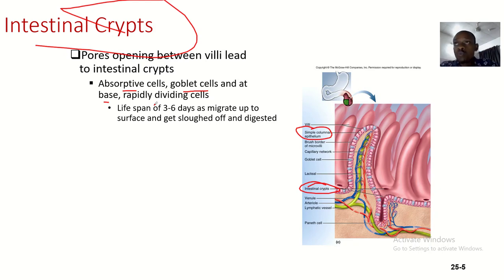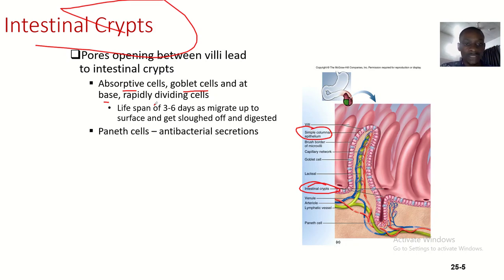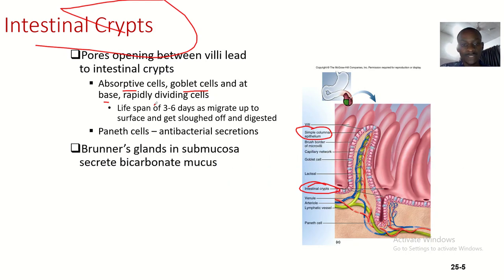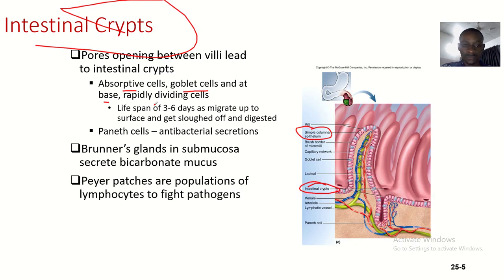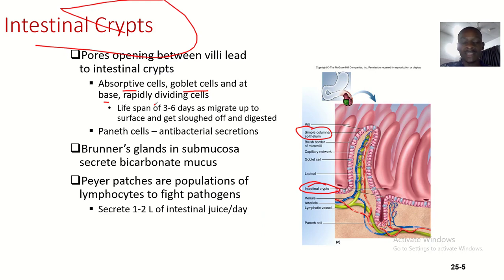Paneth cells produce antibacterial secretions. Brunner's glands in the submucosa secrete bicarbonate and mucus. Peyer's patches are a population of lymphocytes that fight pathogens. The intestinal glands secrete one to two liters of intestinal juice daily, with a mucous pH of about 7.4 to 7.8.